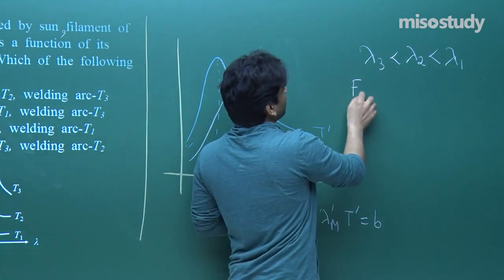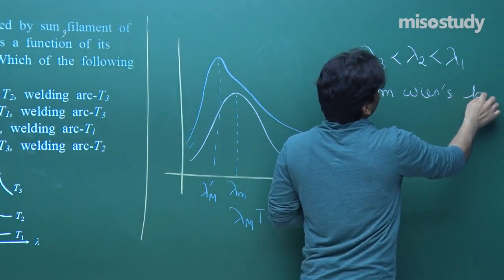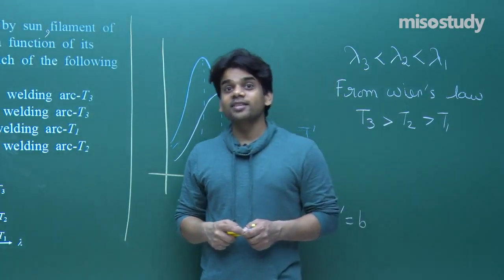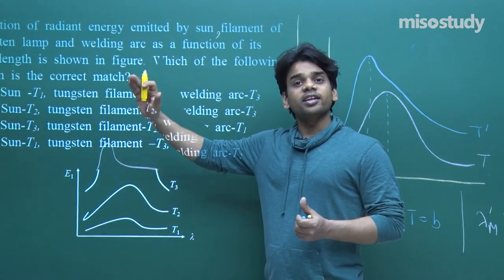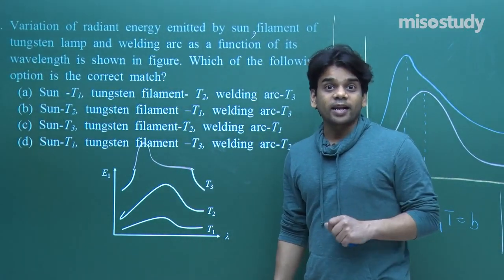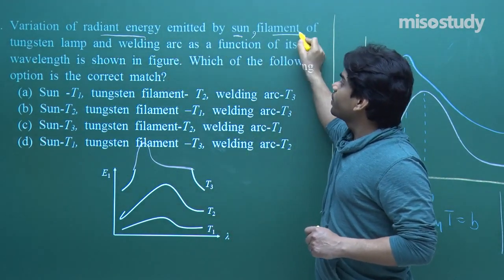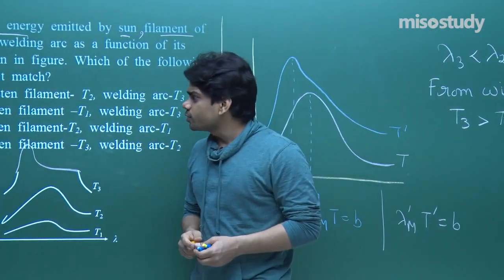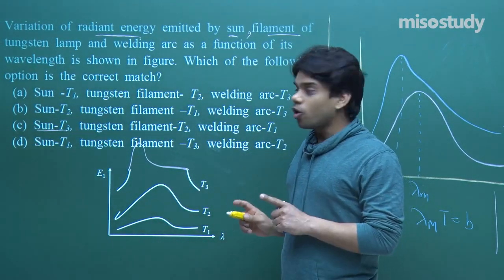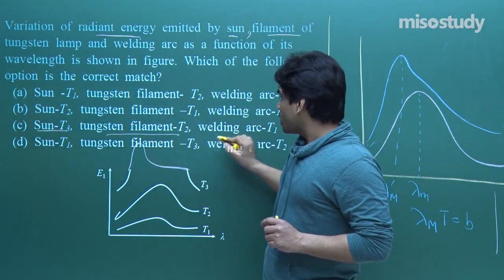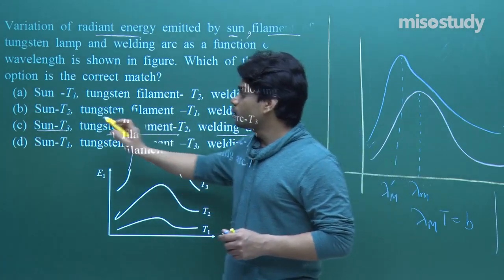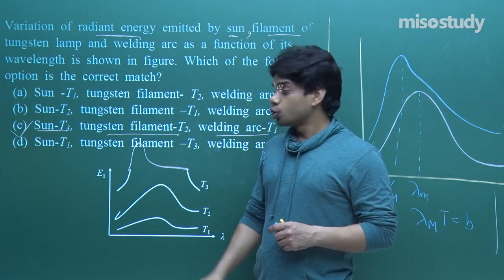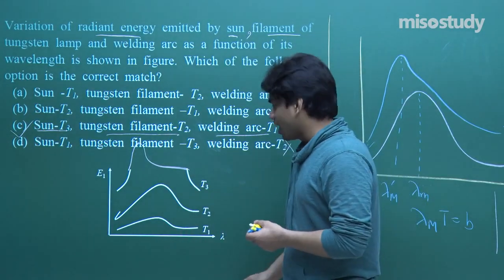From Wien's displacement law, we can comment on temperature: T3 will be highest, then T2, then T1. We know that the sun has the highest temperature, and the highest temperature here is T3. So sun matches with T3 — option C clearly matches. Tungsten filament will be T2, and welding arc will be minimum at T1. Hence option C is the right answer. This is how you logically approach using Wien's displacement curve.